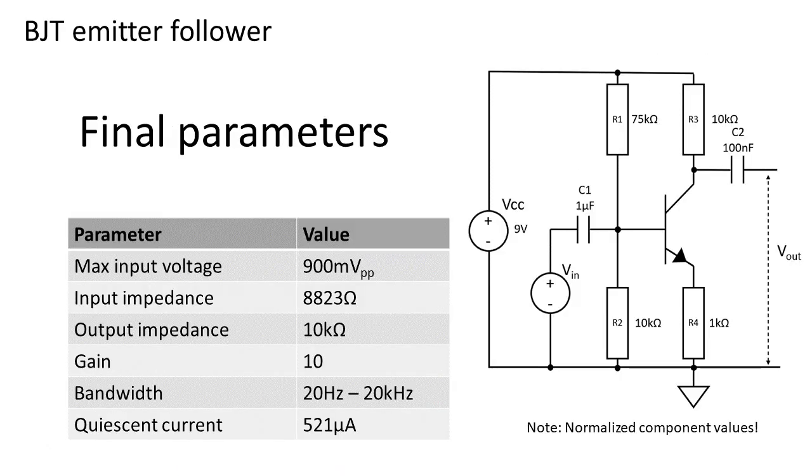In the next table I put all the parameters regarding this amplifier design. The max input voltage is the power supply divided by the gain of 10, equals 900 millivolts peak to peak. The input impedance is about 8,823 ohms. The output impedance is about 10k ohms. The gain is about 10, and the bandwidth is from 20 to more than 20,000 hertz.